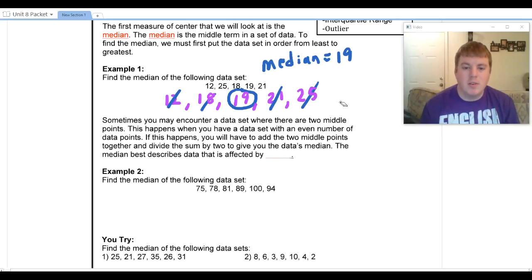So when this happens, what you'll have to do is you'll have to add the two middle points together and divide the sum by 2 to give you the data's median.